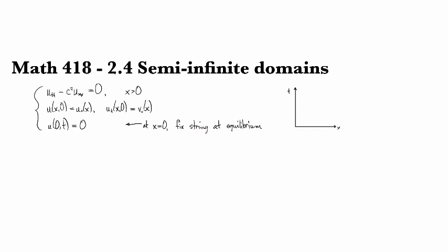Let's look at the wave equation on a semi-infinite domain, so that means we're taking x to have only positive values. We'll take as our boundary condition homogeneous Dirichlet, fixing the value of u to be equal to 0. Physically, this means that at x equals 0, at the origin, we're fixing the string in the equilibrium position so that it can't move up or down out of equilibrium.